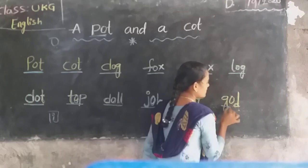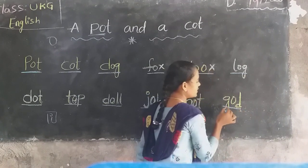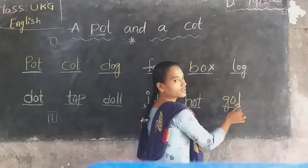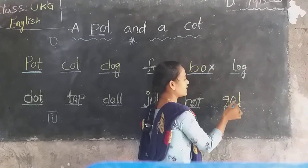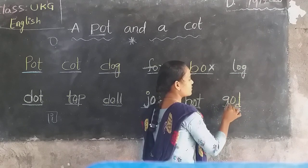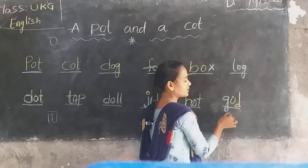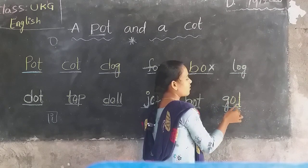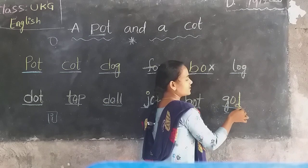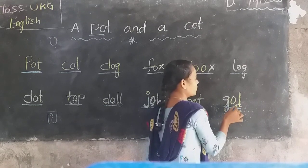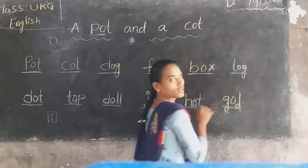Next, the last word is G-O-D, god. Here, see here, the sound of G is G. O sound, O. Next, D sound, Da. G-O-D, god.